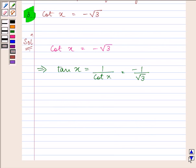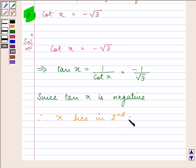Since tan x is negative, x lies in the second and fourth quadrant.